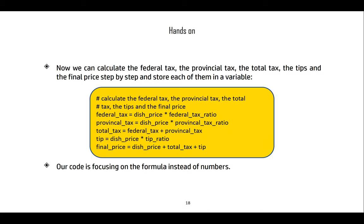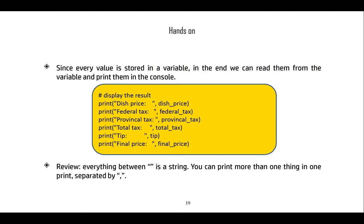Now the code focuses on formulas instead of raw numbers. It's much less confusing — we can understand what each identifier stands for because we named them meaningfully. We can then display this data using print statements with a string followed by a value, for example: print("Dish price:", dish_price), and so on for federal_tax, provincial_tax, total_tax, tip, and final_price. You can print more than one thing per print statement by separating with a comma.